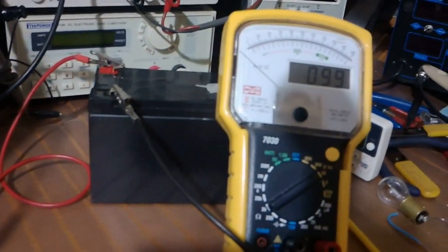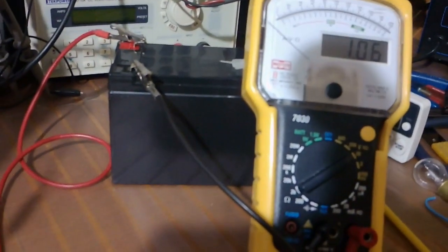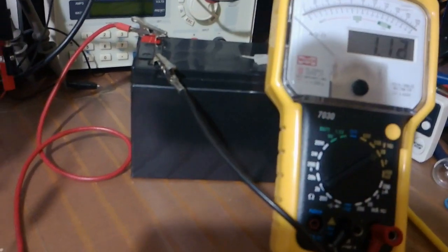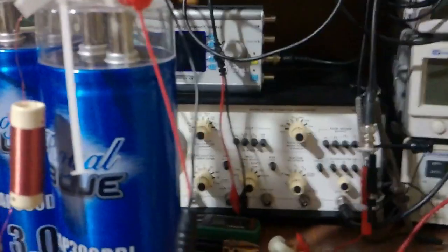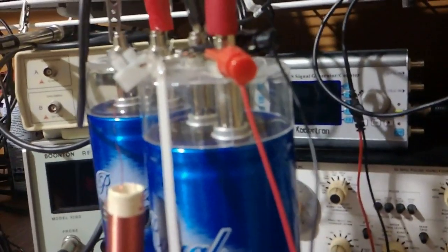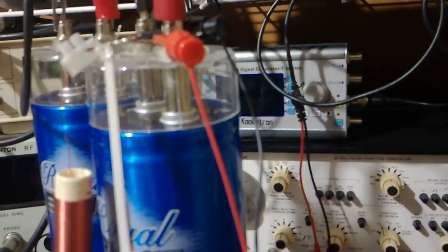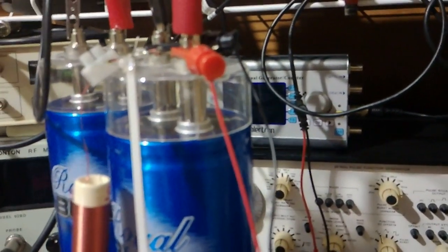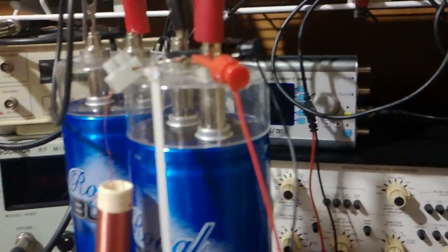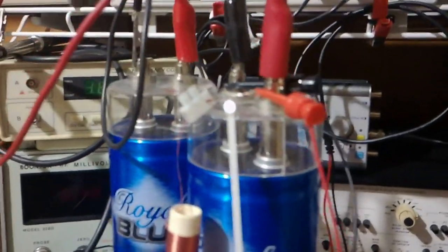My battery has down about 2.3 tenths of a volt. You can barely see the little LED, so there's not a whole lot of RF energy up here right now with these two large capacitors on it.